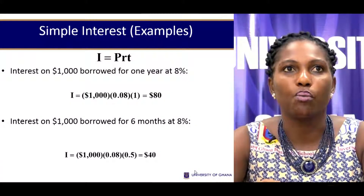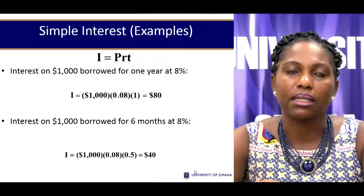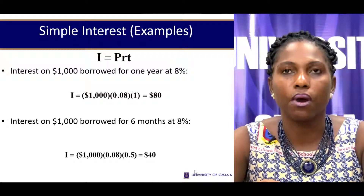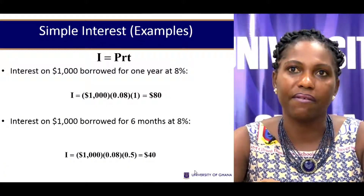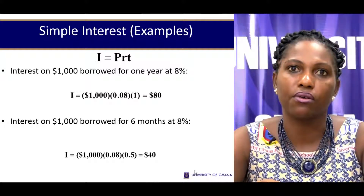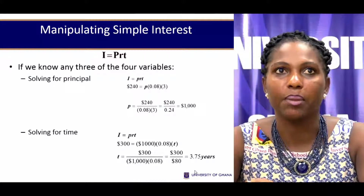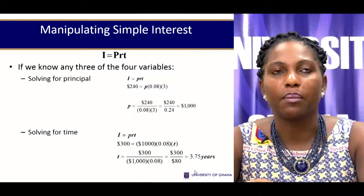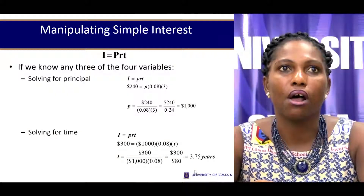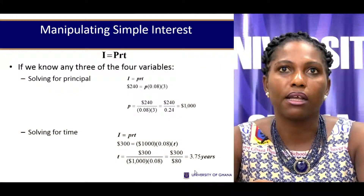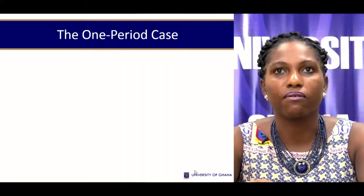For example, if we borrow $1,000 for one year at 8%, the interest that will accrue is $80. If we borrow $1,000 for six months — that's half a year — the interest accruing will be half the annual amount, which is $40. With the same formula, we can easily solve for the principal itself if we know all the other parameters. We can solve for time or solve for rate.